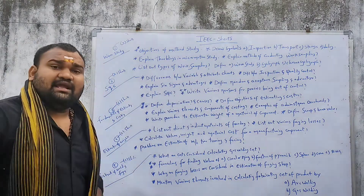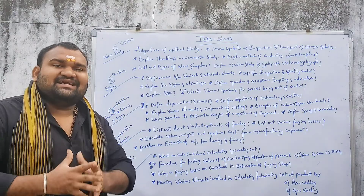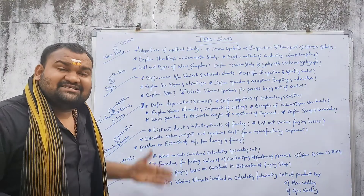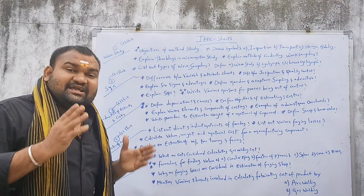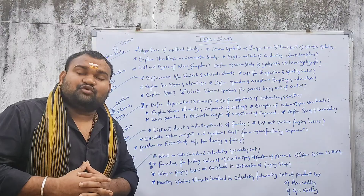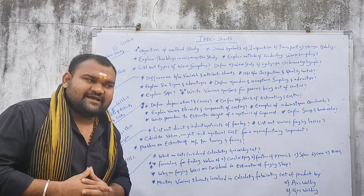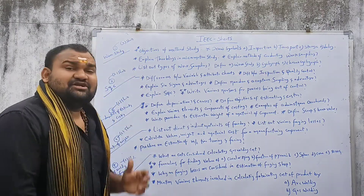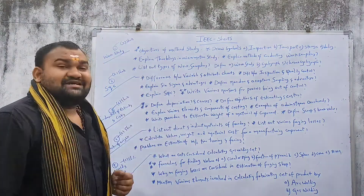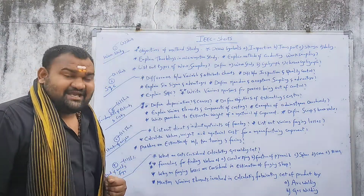In the first chapter, we have two work study chapters. We have five chapters — we have ten chapters total. The first chapter is Objectives of Method Study.